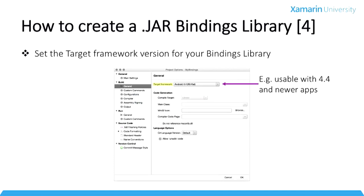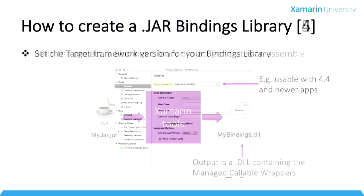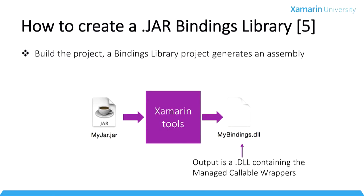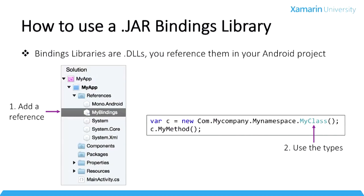Next you should check the target framework. You are building an Android library, so you have to consider what's going on inside the jar file — is it using any Android APIs, and if so what version of Android are those APIs available in? Choose a framework appropriately. Then click the build button and the Xamarin tooling will do the work for you: it takes the input jar file, creates the managed callable wrappers, and generates a DLL.